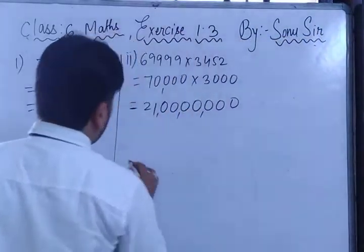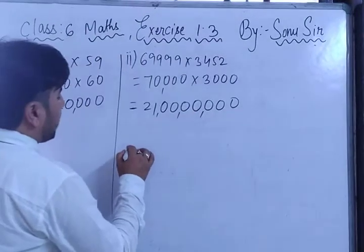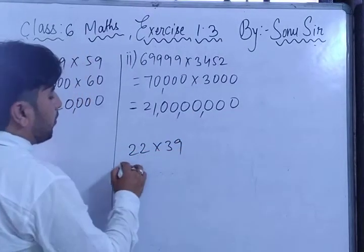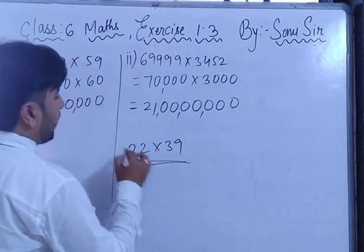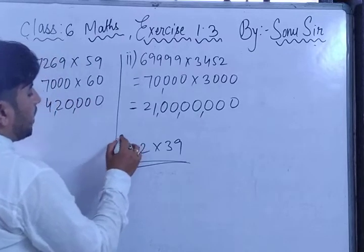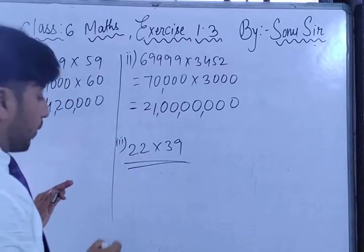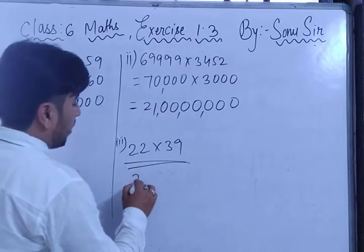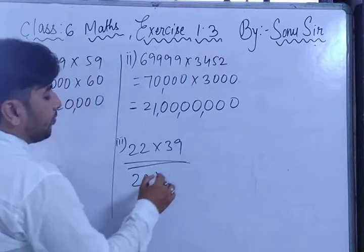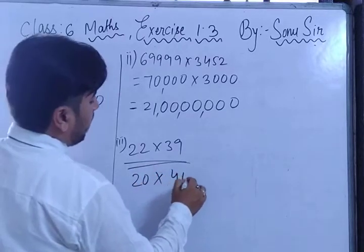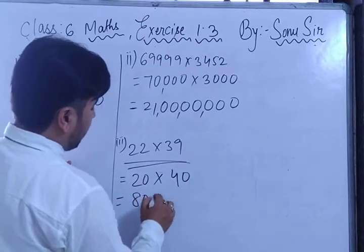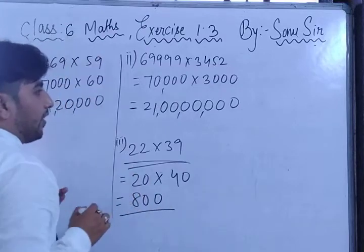For a smaller number example: 22 × 39. The round figure value of 22 is 20, and the round figure value of 39 is 40. So 4 × 2 = 8, giving the answer 800.